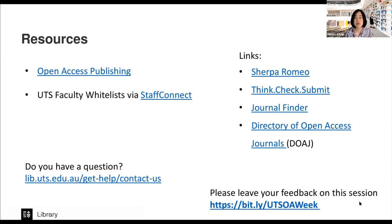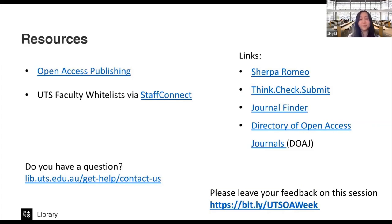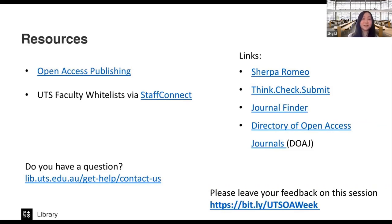A question from Tamara: does it matter if you can find the journal in one of those websites but not the others? Scopus and Web of Science do have different coverage, but both have quite good selection criteria. Journals indexed in either of these two tools should be legitimate and should not be predatory — both are quite reliable. With no further questions, the session can now close.